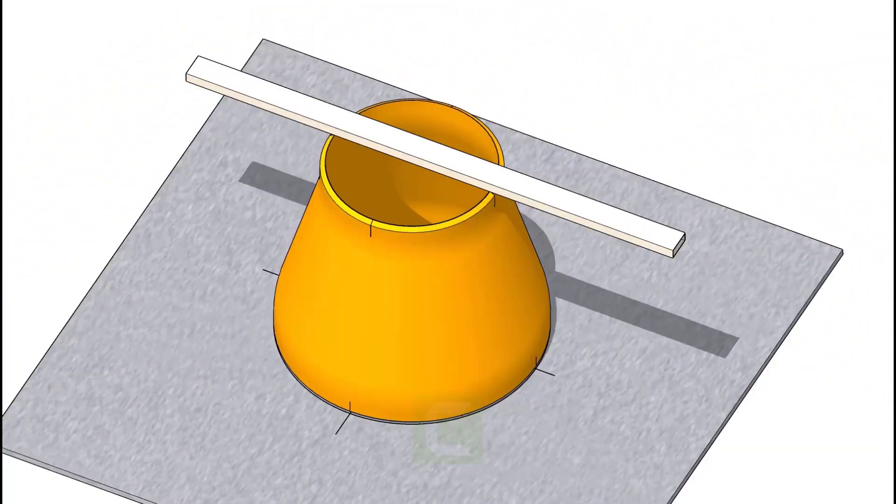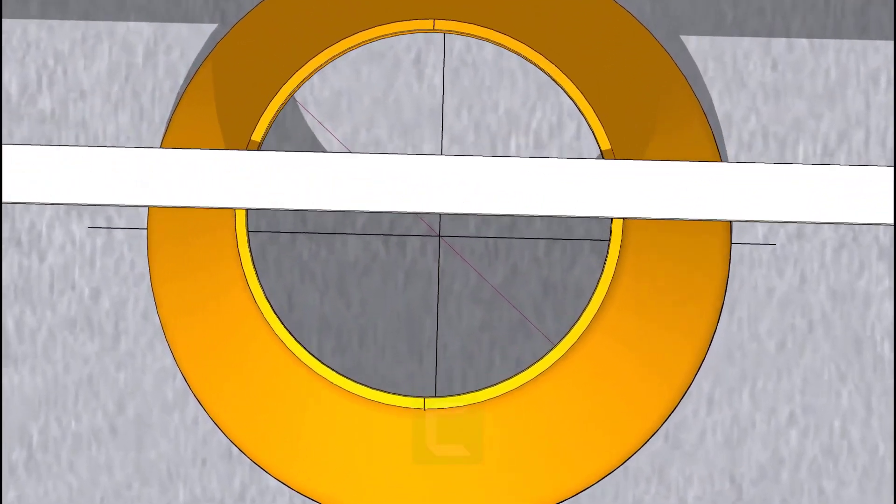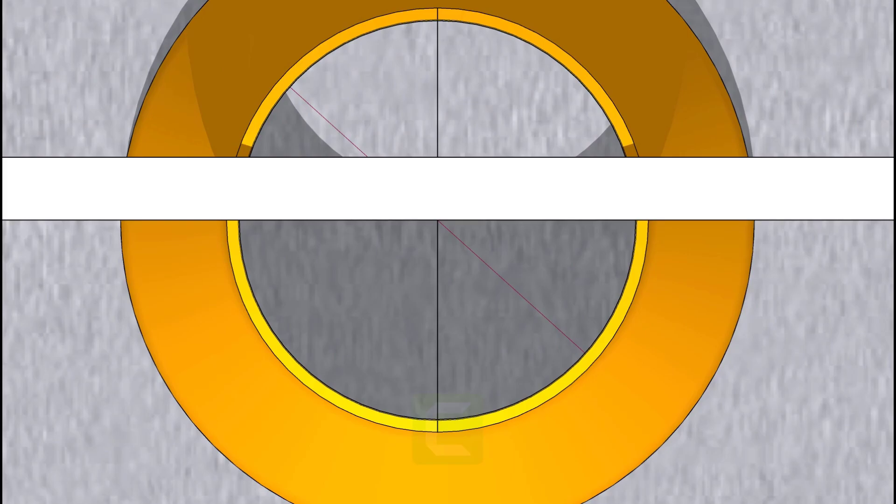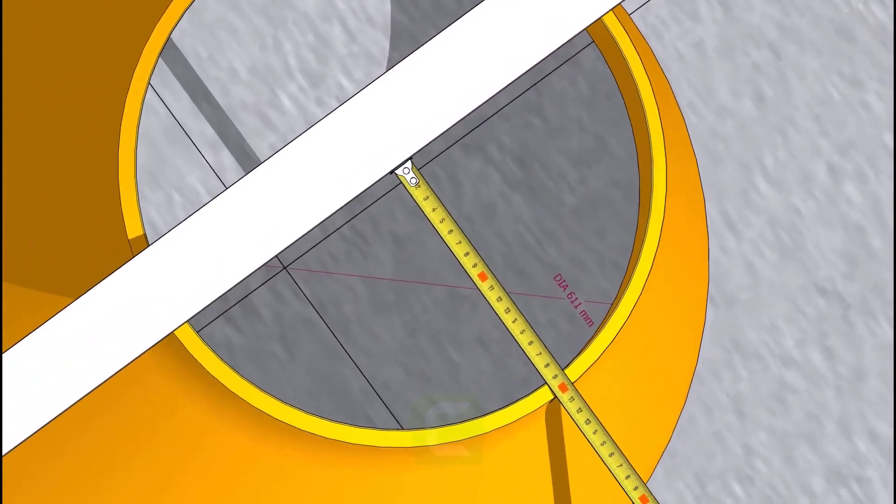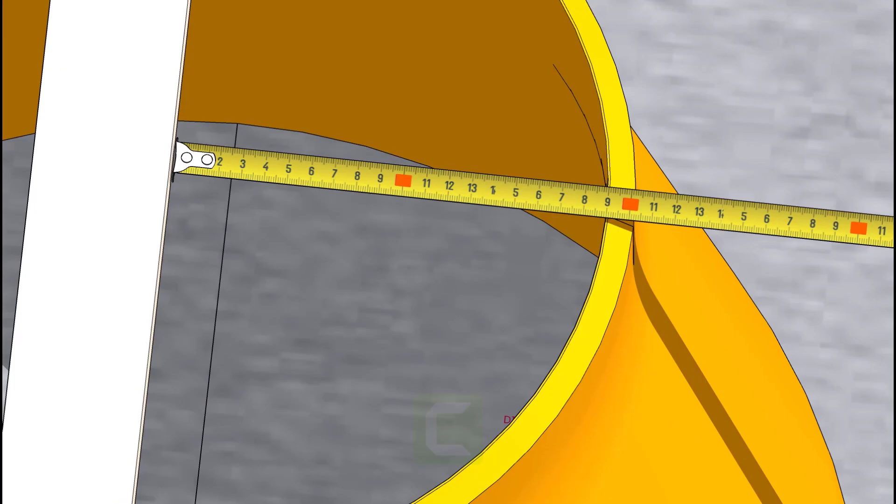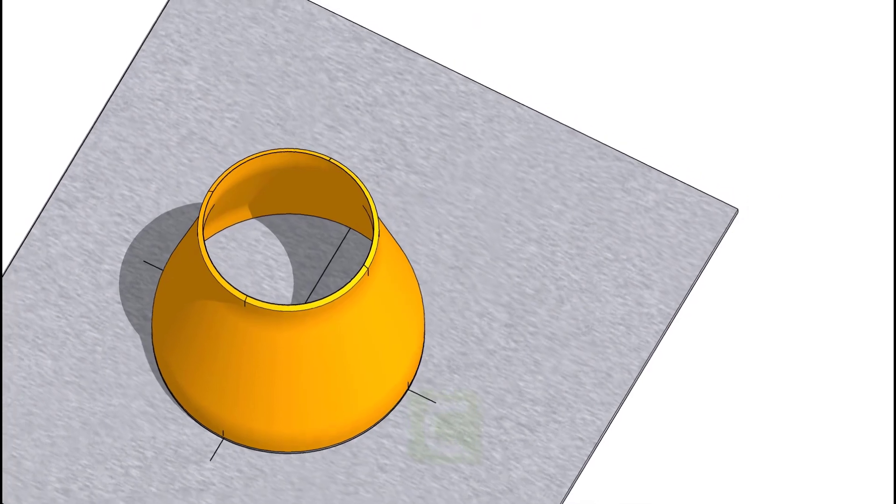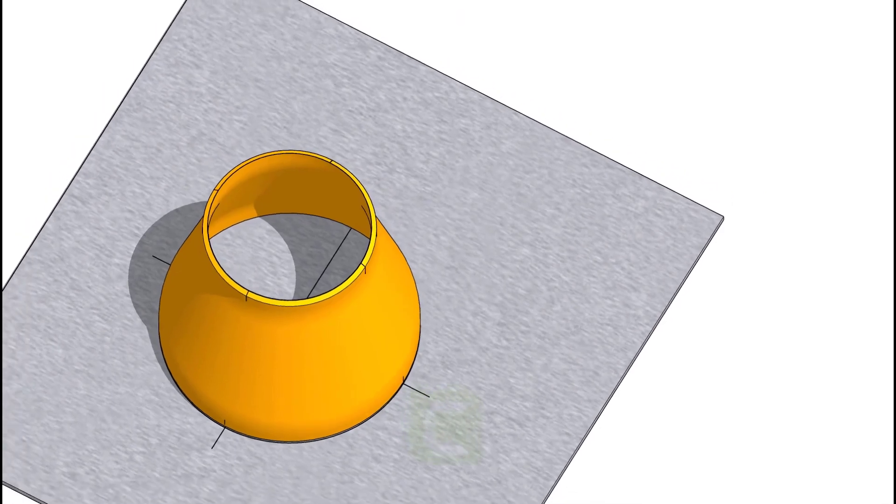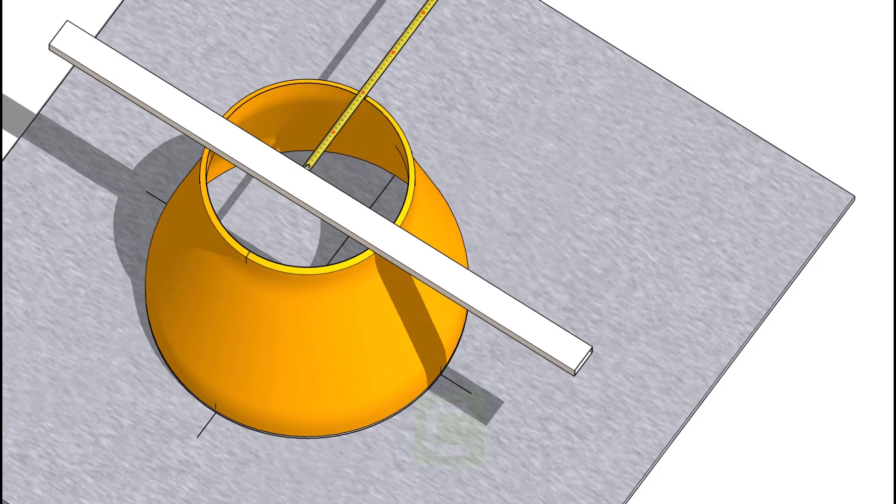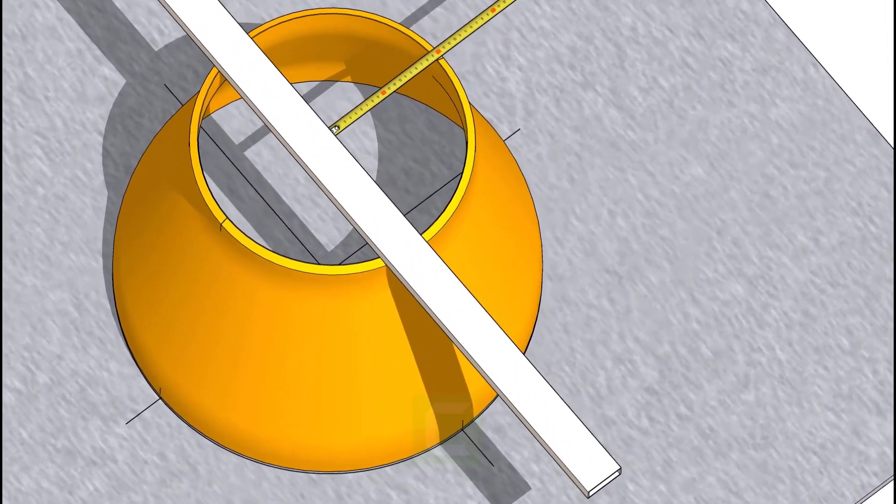Let us cross-check if the marking is correct. Put the box on the marking as shown. Check the half diameter using a scale or a measuring tape. Check the half diameter on the other side also.